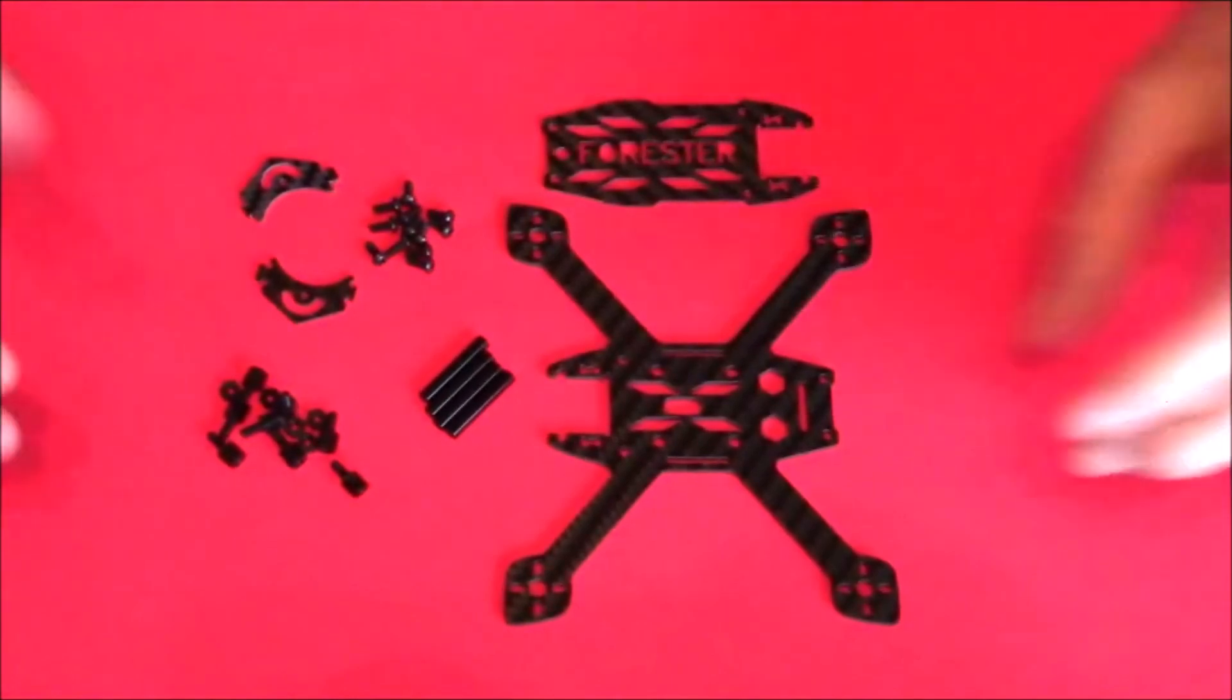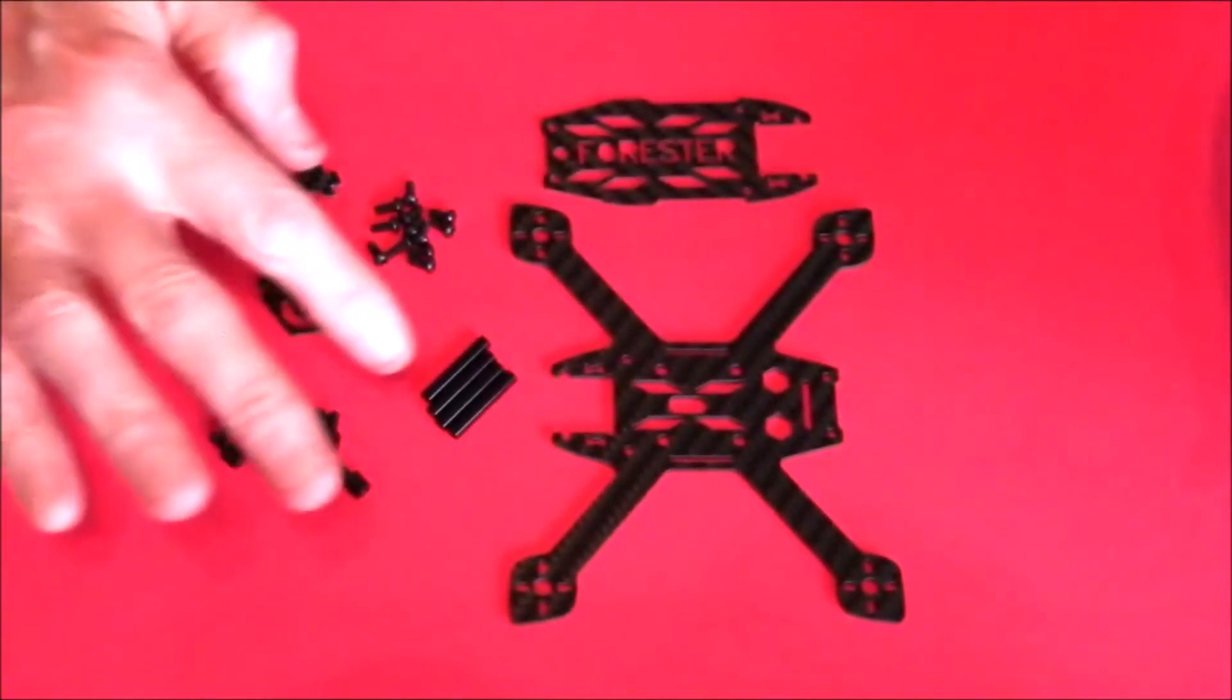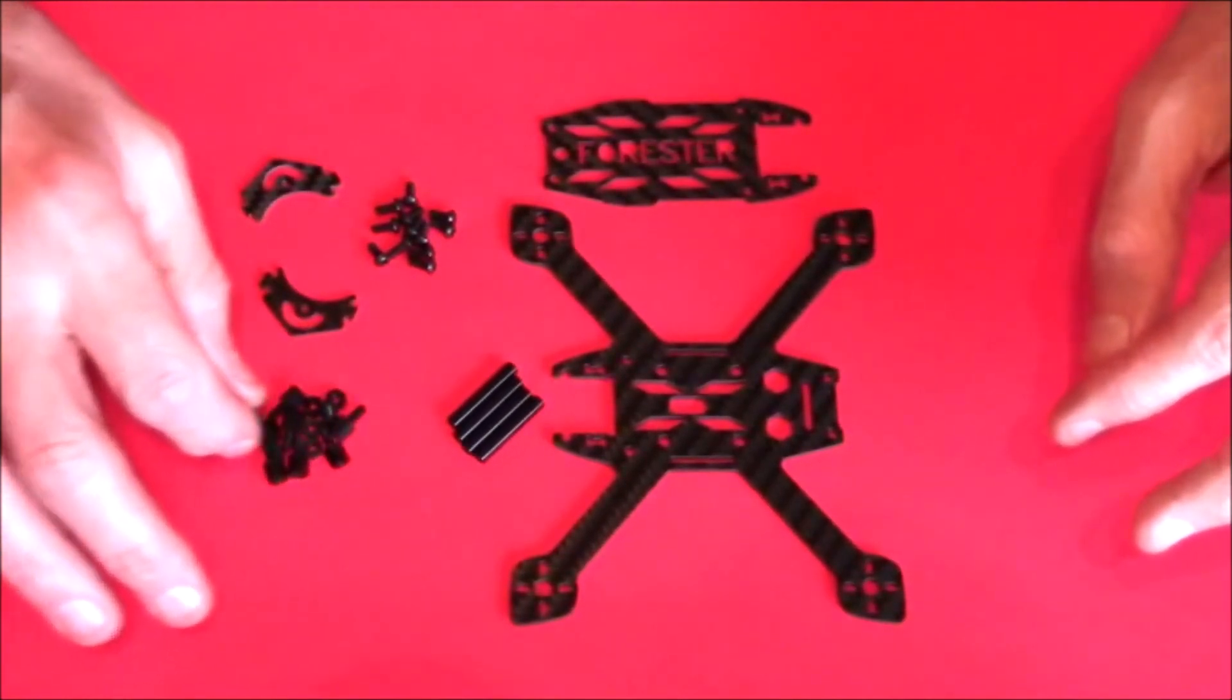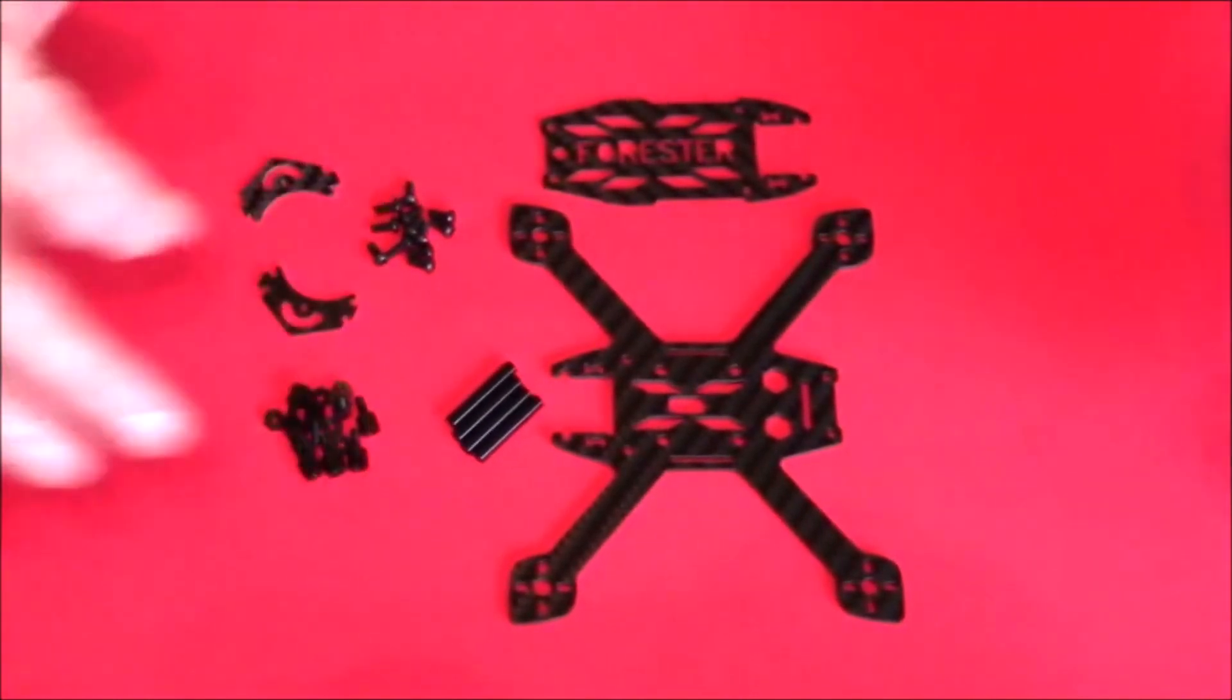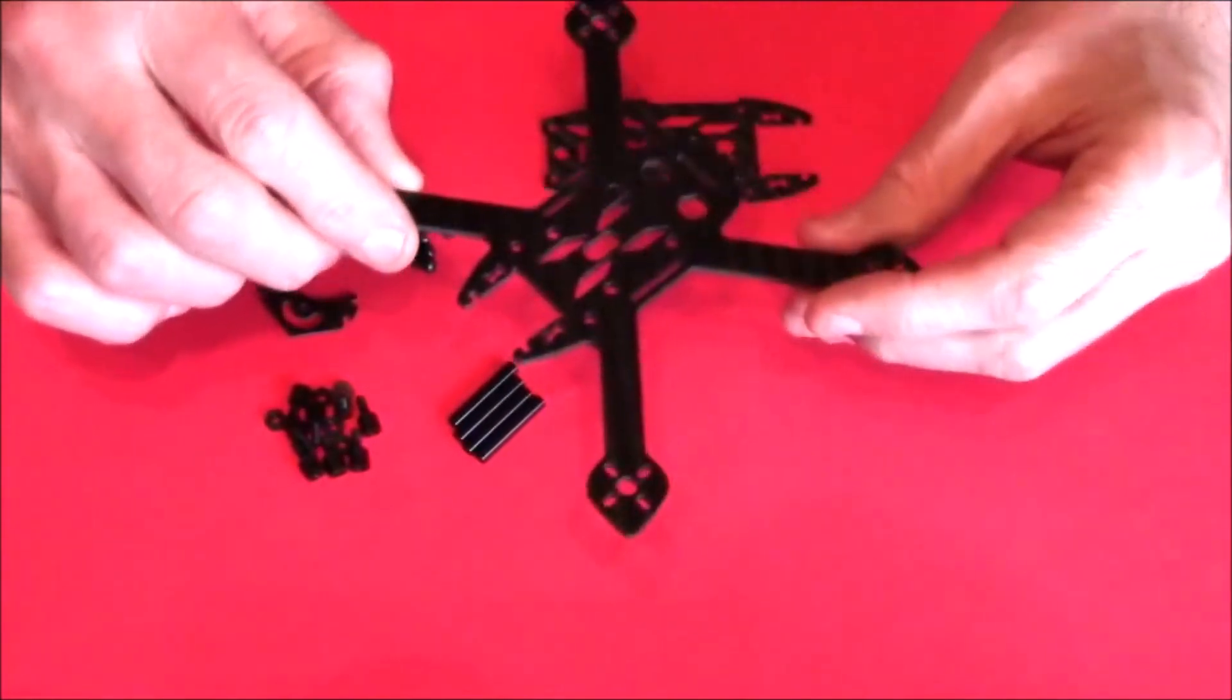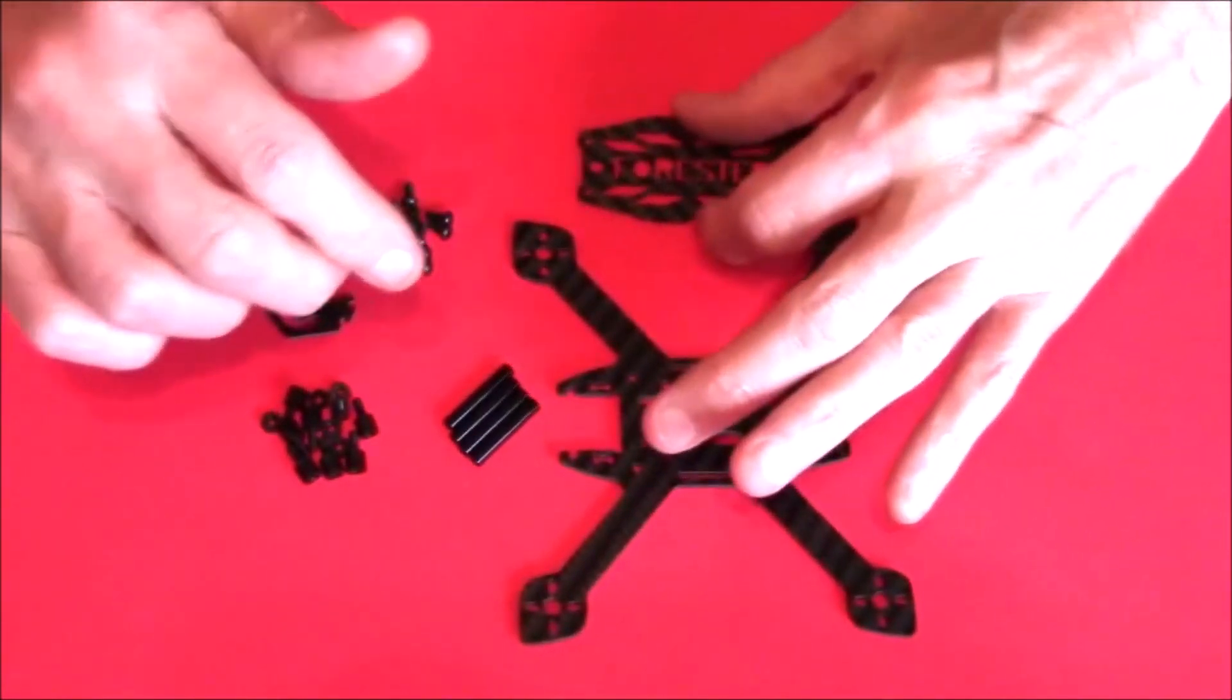You don't get a lot in the package. The main parts are the bottom, the top, and the two little brackets for mounting the FPV camera. You get some metal standoffs for your top and some spacers for your flight control board. Apart from the screws, that's it. It's 36 grams. I measured it - I think it was a 3.5 mil thick bottom plate and a 2 mil thick top plate.